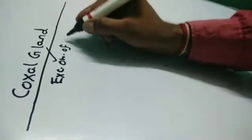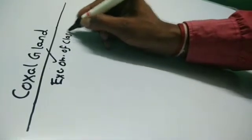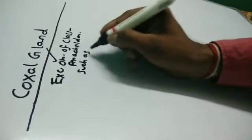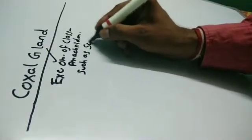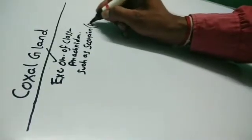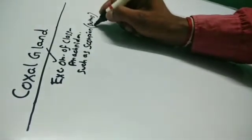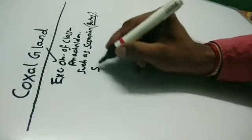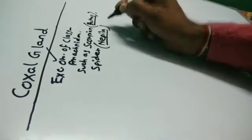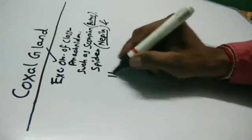Coxal gland is found in class Arachnida, such as scorpion with scientific name Buthus, spider such as Nephila, and some horseshoe crabs.